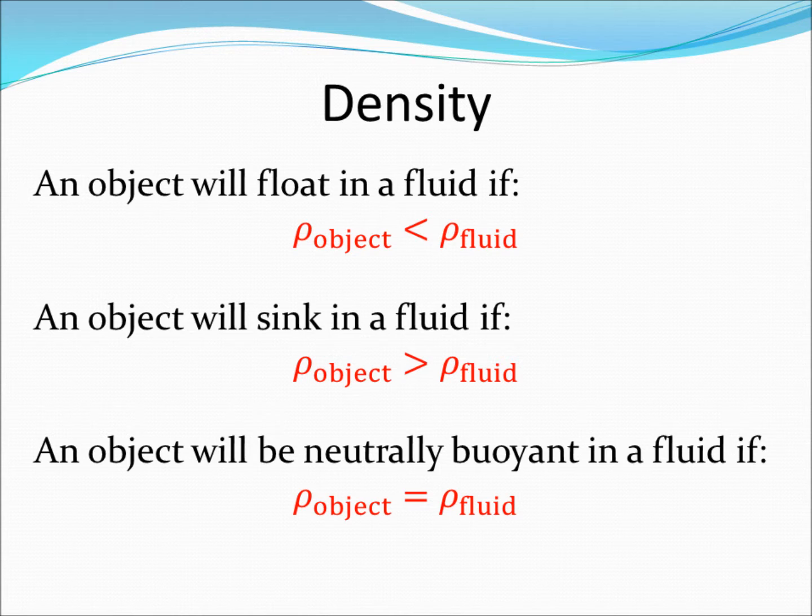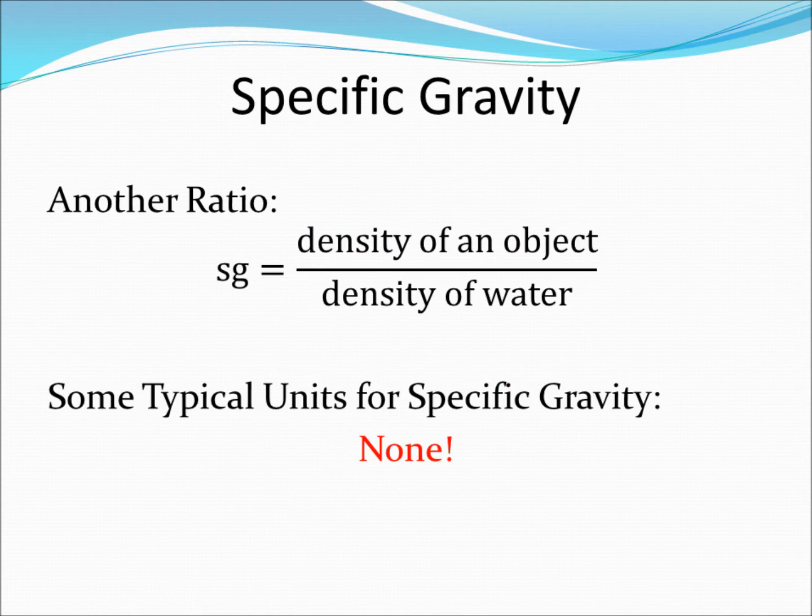Specific gravity is defined as the ratio of the density of an object to the density of water. Specific gravity is represented by SG. If we have the same units for density in the numerator and denominator, the units will cancel out, resulting in no units for specific gravity.